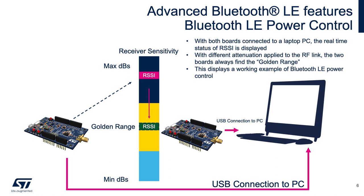The LE power control is a BLE feature introduced with the Bluetooth 5.2 specification. It helps minimize power consumption using a dynamic algorithm that scales the TX output power up and down depending on the RF path loss between the two ends of the link, in order to keep the RSSI within an optimum range.